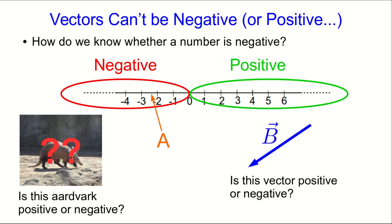Well, so now I'm going to ask you whether this vector is positive or negative. I hope you can see that this question is exactly as ridiculous as asking whether the aardvark is positive or negative. A vector isn't a number. It doesn't live on the number line. It's an arrow. And arrows don't live on number lines. And so vectors can't be positive or negative. It's meaningless to say that a vector is positive or negative.